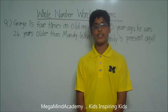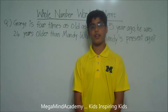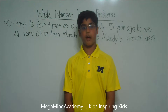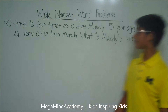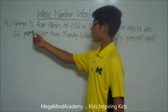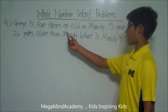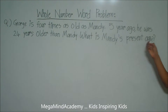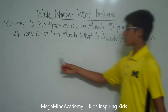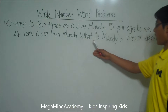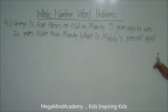Hi! Today we're going to learn about whole number word problems. Let's say we have a problem like: George is four times as old as Mandy. Five years ago, he was 24 years older than Mandy. What is Mandy's present age?